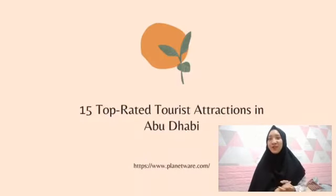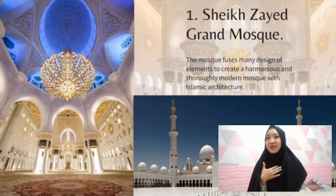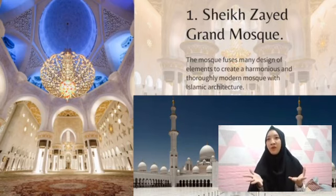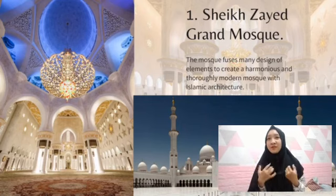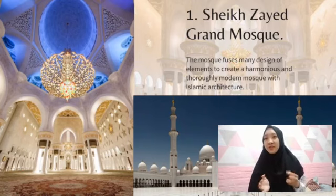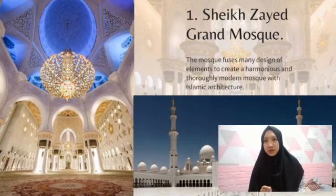So let's start. The first is Sheikh Zayed Grand Mosque. The mosque fuses many design elements to create a harmonious and truly modern mosque. We can see that the picture is so beautiful and it's very Islamic architecture — modern. It used glasswork, mosaic, tiling, and intricate carving to spectacular effect on both the interior and exterior. This mosque is so far the most popular sightseeing attraction in the city.